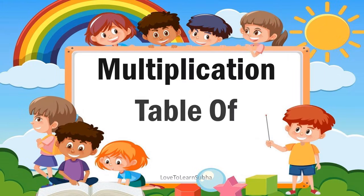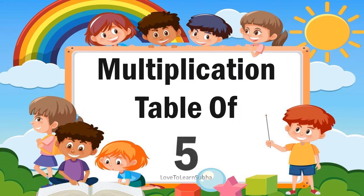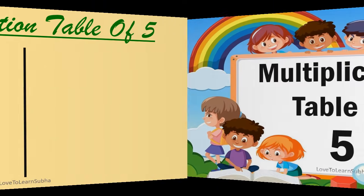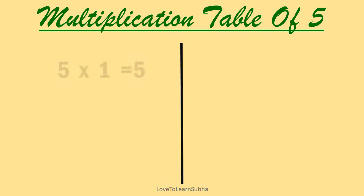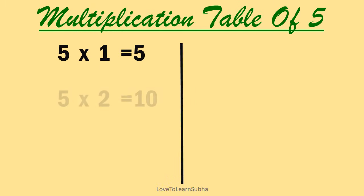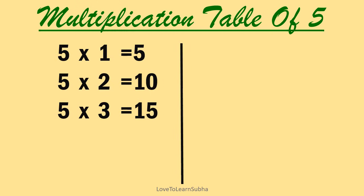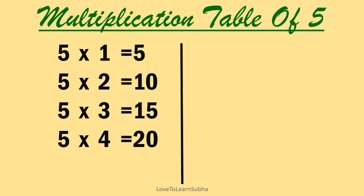Multiplication table of 5. 5 ones are 5, 5 twos are 10, 5 threes are 15, 5 fours are 20, 5 fives are 25.